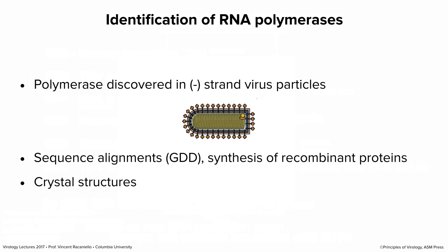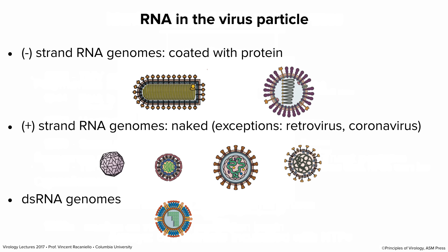The RNA-dependent RNA polymerase was eventually discovered in the particles of negative-strand viruses. The experiment I showed used a plus-stranded RNA virus, and there's no polymerase in those particles. But for negative-stranded RNA viruses, polymerase is in the particle, because negative strands upon entry can't be translated by the cell — the cell cannot replicate them. Plus-strands can be translated and you can make a polymerase from that, but minus-strands have to bring in a polymerase with them. We got genome sequencing, identified coding regions for polymerases, produced recombinant proteins, and found conserved motifs like GDD.